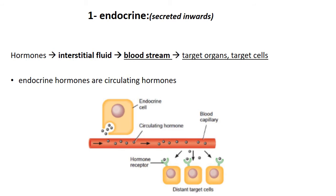When we talk about endocrine hormones or an endocrine way of secretion, 'endocrine' means secreted inwards — hormones secreted inside the body and released into the bloodstream. The cells that produce these endocrine hormones are called endocrine cells. These cells produce hormones that are released into the interstitial fluid, enter the blood circulation, and are transferred through the blood to their target cells or target organs.